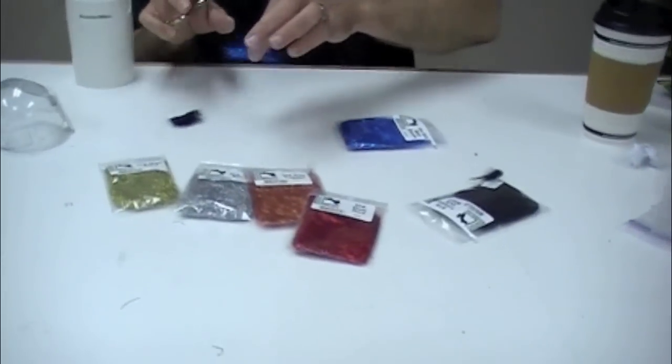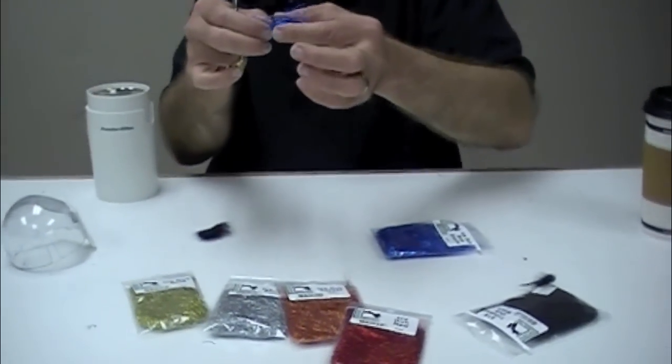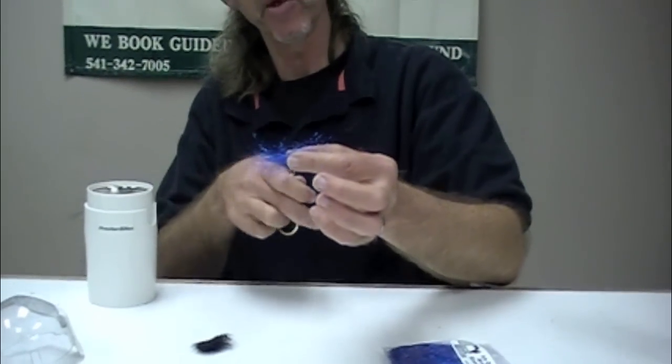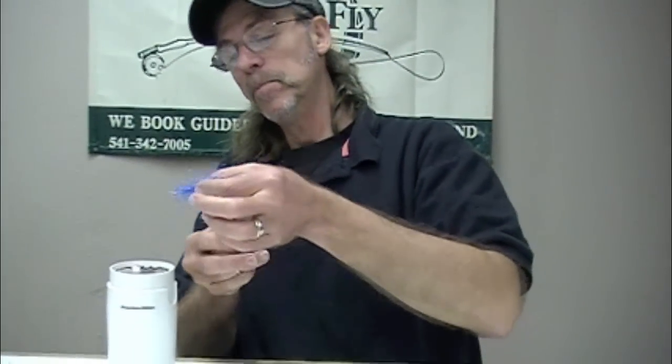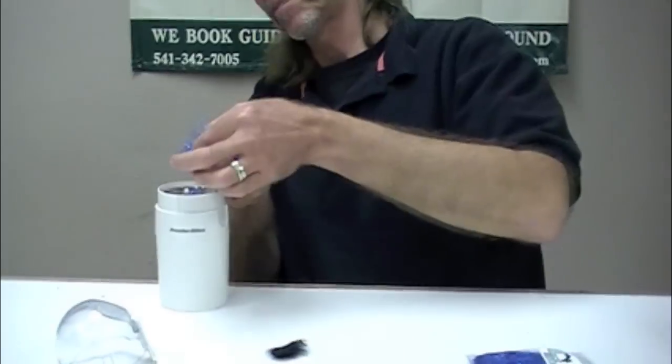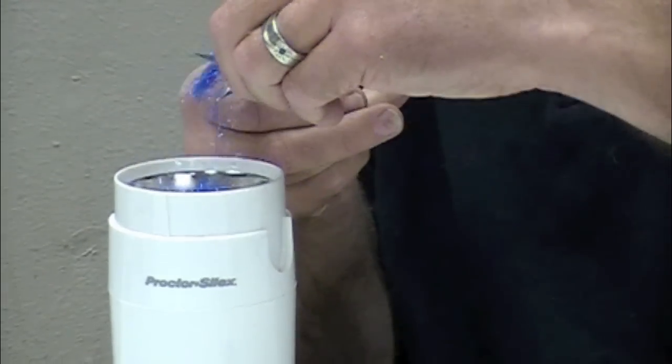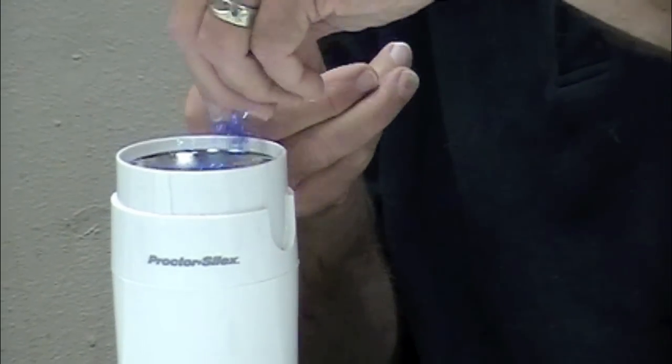If you blend these just as they are, they'll wrap and they'll ball up. So you cut them. You cut them into shorter pieces, like you would if it was Angora Goat.